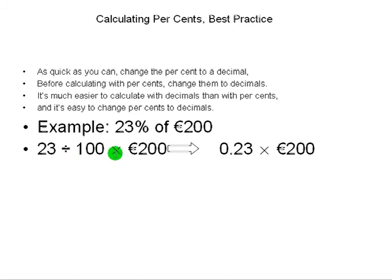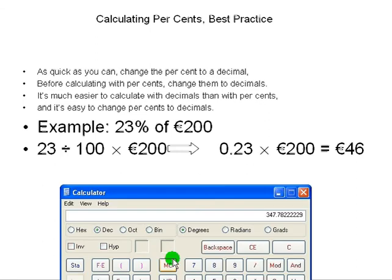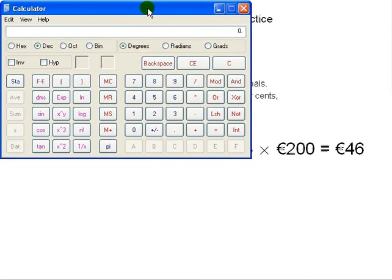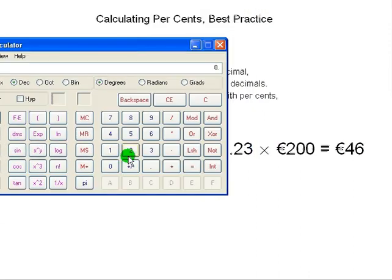In this calculation, we have a division and a multiplication. When we do the multiplication, we get this answer. Let's double check that on our calculator. If you do 0.23 times 200, you get 46.